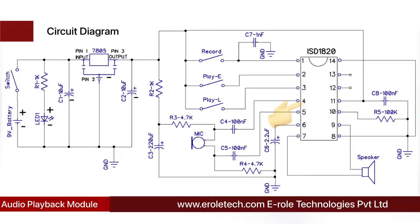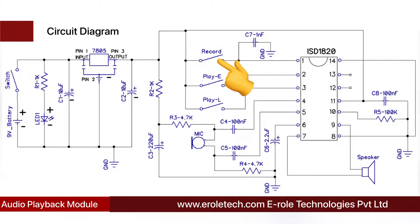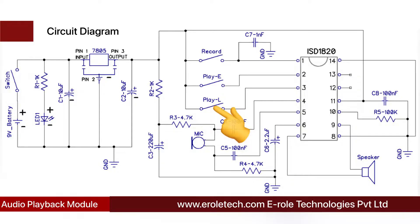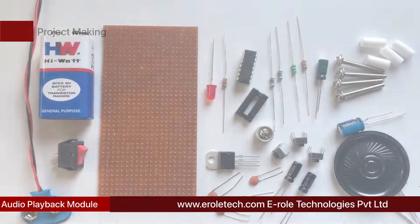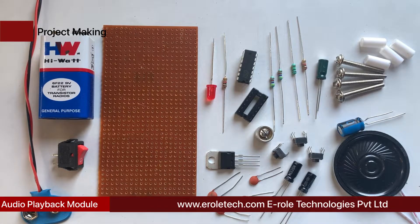This is the ISD 1820 voice recorder IC; it can store audio up to 20 seconds. This IC has 14 pins. Pin number 14 is ground. Pins 1, 2, and 3 are connected with tact switches. When we press the first switch, the IC starts recording audio. When the IC gets a pulse from the second switch, it plays the full audio. The third switch produces sound as long as it is pressed. The mic takes audio input and the speaker produces the recorded audio.